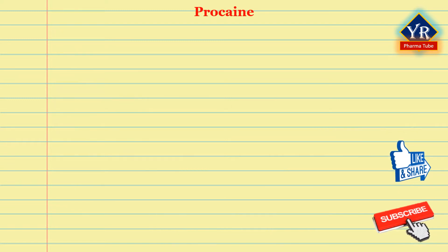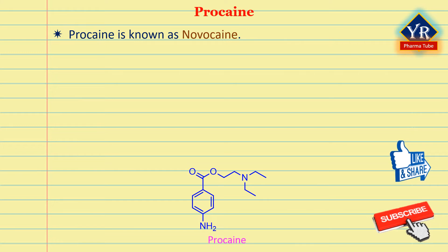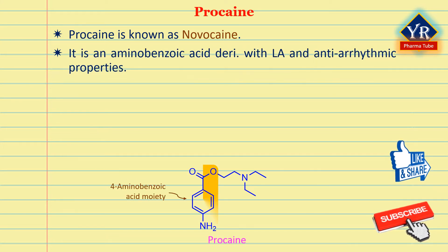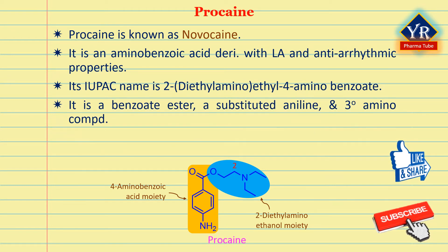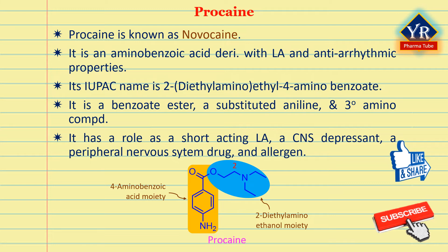The last drug is procaine, better known as Novocaine. Procaine is an aminobenzoic acid derivative with local anesthetic and anti-arrhythmic properties. Its IUPAC name is 2-diethylaminoethyl-4-aminobenzoate. It is a benzoate ester, a substituted aniline, and a tertiary amino compound. It has a role as a short-acting local anesthetic, a CNS depressant, a peripheral nervous system drug, and a drug allergen.